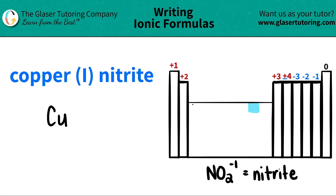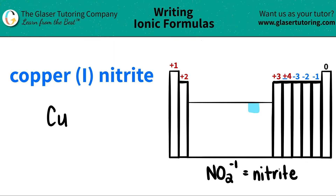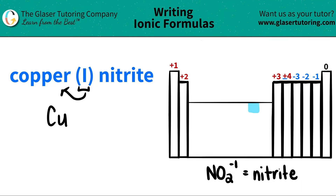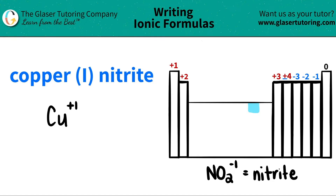I have Cu, but remember this is a transition metal, and transition metals can have many different charges. Which charge am I going to use for copper? That's why there's a Roman numeral here — the Roman numeral is always the charge of the metal. In this case, copper is a +1, and it's positive because all metals are positive; they want to lose electrons.